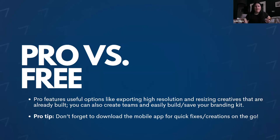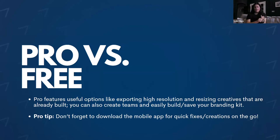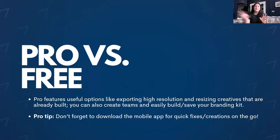Another thing that makes pro stand out from the free version is that you can easily build and save your branding kit within the platform itself. When you're looking to create a brand design for your business, you want a few key things: ideally a logo, specific colors, and fonts you want to use. With pro, you can put all of this into a branding kit, have it readily available, and give other team members access so they know what colors and logos to use.